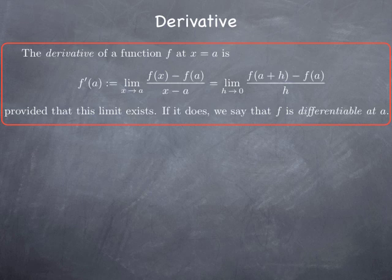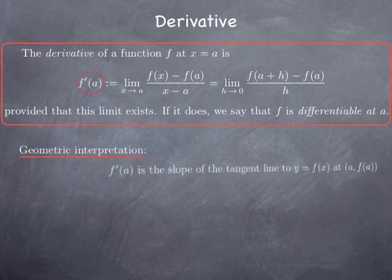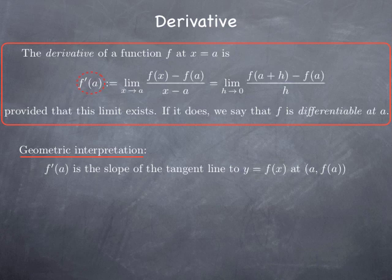To see that these two expressions really yield the same limit, you only need to write h equal x minus a. The notation we use for this limit is f prime of a, provided that the limit exists. And if this limit does exist, then we say that the function f is differentiable at a, and f prime of a is its derivative at a. Geometrically, f prime of a is nothing but the slope of the tangent line to the graph of the function f at the point (a, f(a)).